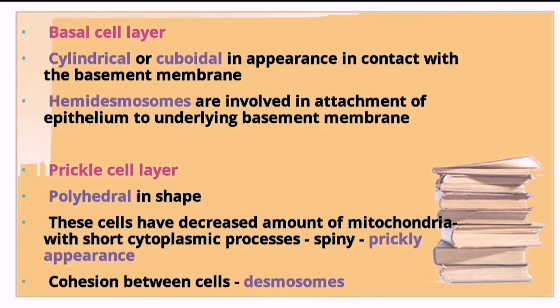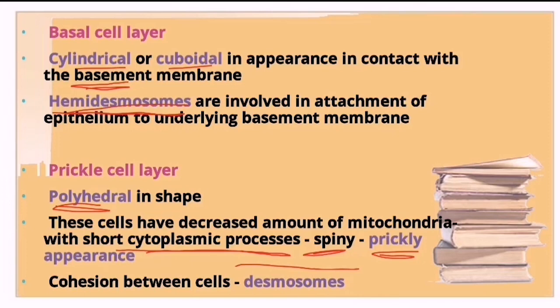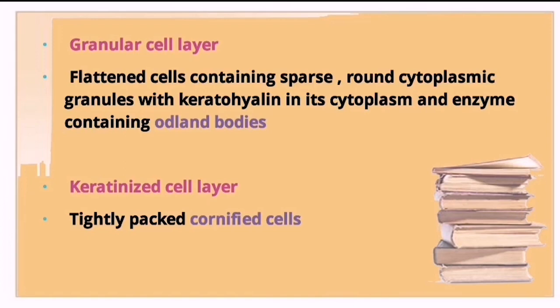The stratum basale has cylindrical or cuboidal cells in contact with the basement membrane, attached via hemidesmosomes. The prickle cell layer (stratum spinosum) has polyhedral cells with short, spiny cytoplasmic processes giving a prickly appearance; cohesion between these cells is formed by desmosomes, unlike the hemidesmosomes of the basal layer.